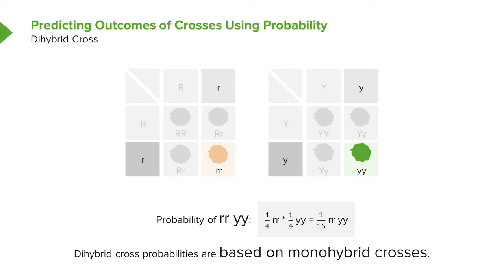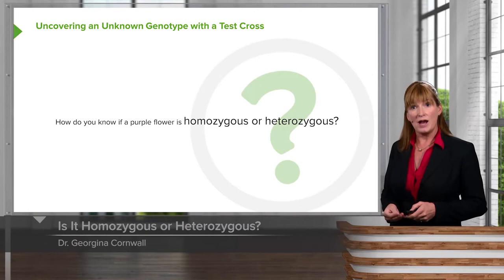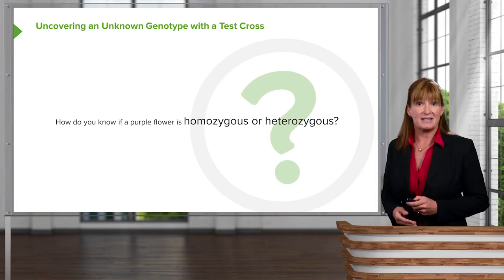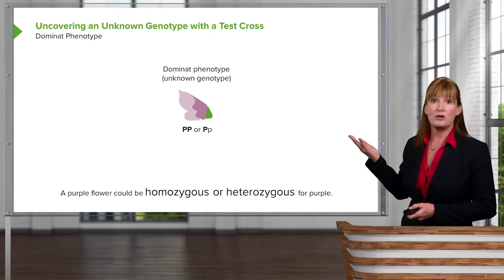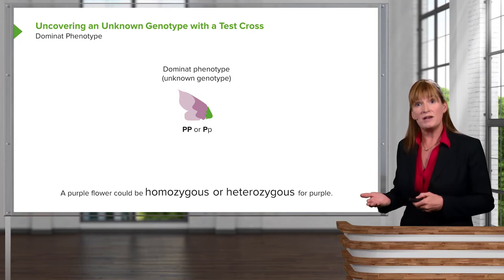Now, if you have a purple flower and you're just looking at it, how do you know if it is heterozygous or homozygous? There's a great way to test it: it's called a test cross. We have a purple flower that could be homozygous dominant (big P, big P) or heterozygous (big P, little P). Before crossing it and counting all the progeny, we need to know whether it's true breeding or not.